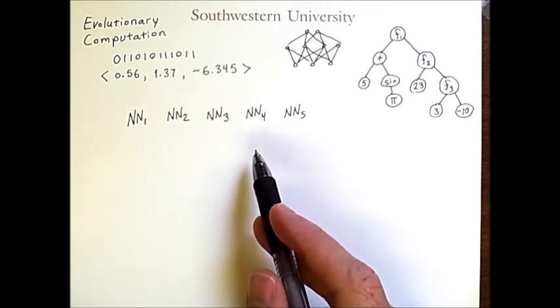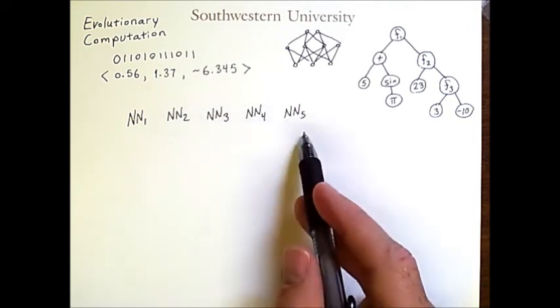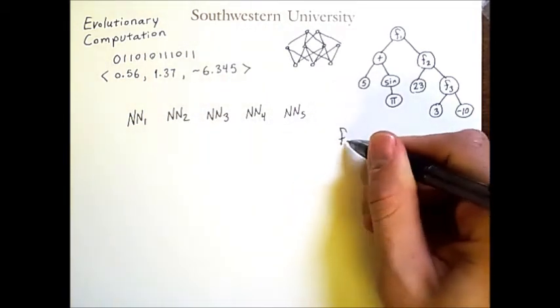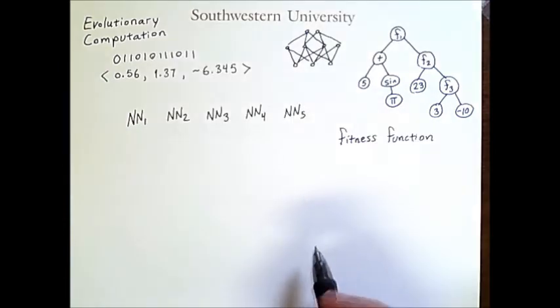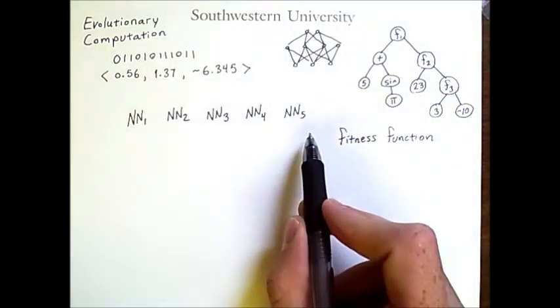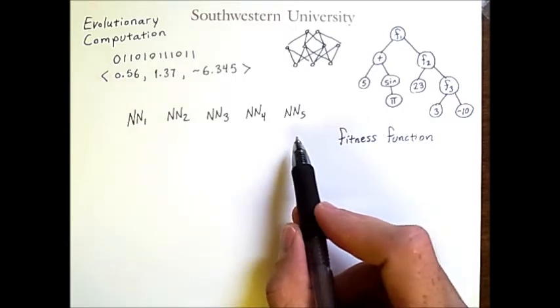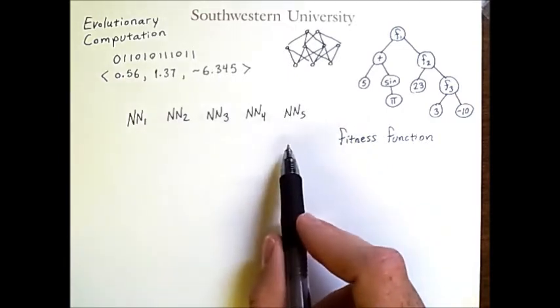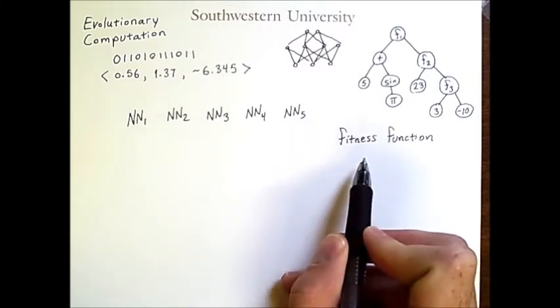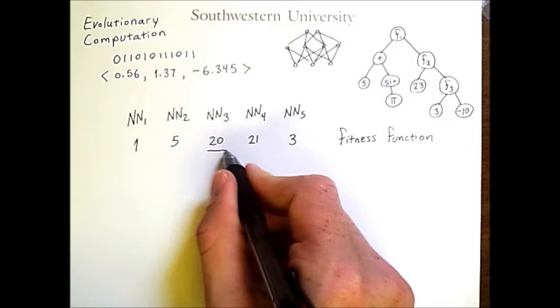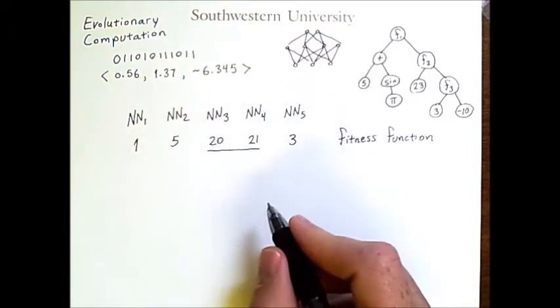In any case, you would be able to take each of these individuals and apply to it a fitness function. This is a mapping from candidate solutions to numbers that you will usually want to maximize. Assume we evaluate each of these agents, and the fitness function values are the following. Clearly, these two neural networks have better scores than the rest.